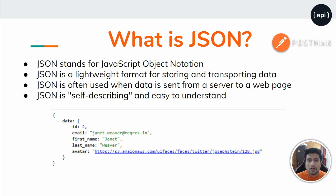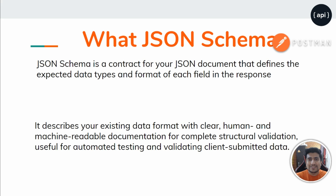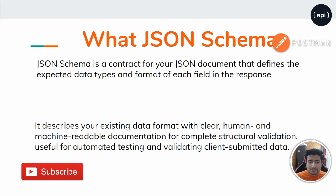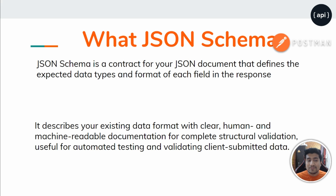So what is JSON schema? JSON schema is a data format — machine-readable and human-readable — used for structural validation. Generally JSON schema is used to validate the response of a JSON. It's basically a contract for your JSON document that defines the expected data types and the format of each field in the response.